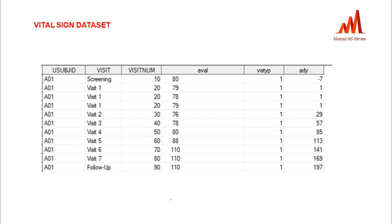The visit and related analysis variables we are going to derive in the ADaM programming. Here, in the middle of ADaM programming, we already derived the analysis day variable (ADY) — how many days the subject completed from treatment start. Minus seven means the screening date was seven days before treatment. Day one is visit one, day 29 is visit two, day 57 is visit three, and so on.